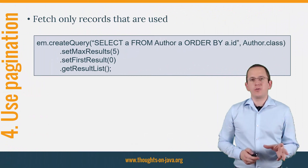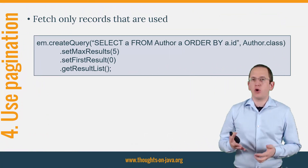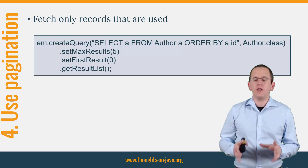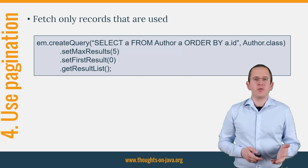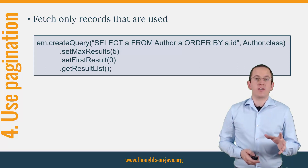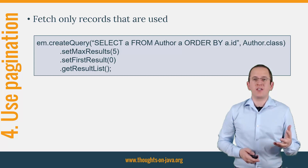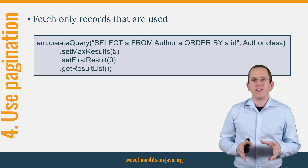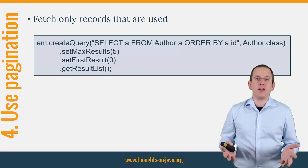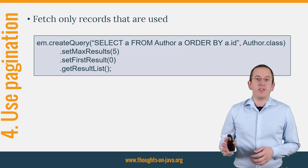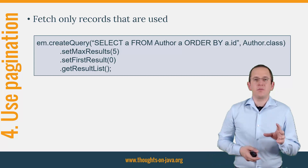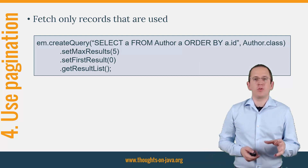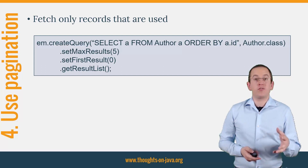Tip number 4: use pagination. When you fetch huge lists of entities or DTOs, you should always ask yourself if you really need all of them. If you show them to your user, the answer is most often no. Humans can't handle lists with hundreds of elements. Most UIs therefore split them into multiple chunks and present each on a separate page. In these cases, it doesn't make sense to fetch all entities or DTOs in one query — the UI doesn't need them and it just slows down your application. It's much better to use the same pagination approach in your query and fetch only the records that are shown in the UI. You can do that by setting appropriate values for first result and max result on the query interface.